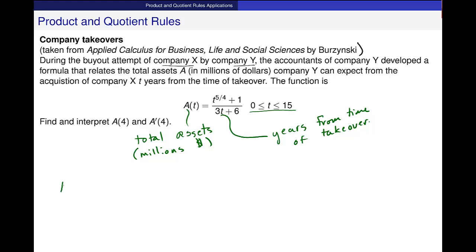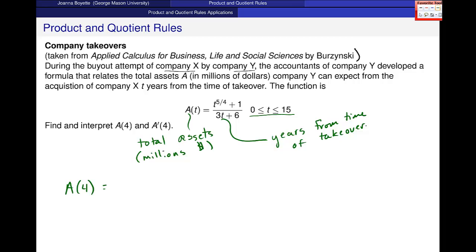First, let me find A(4). So A(4) is 4 to the 5/4 plus 1 over 3 times 4 plus 6. 4 to the 5/4 plus 1 is 5.66 over 12, and I get 0.472. That output is in millions of dollars.